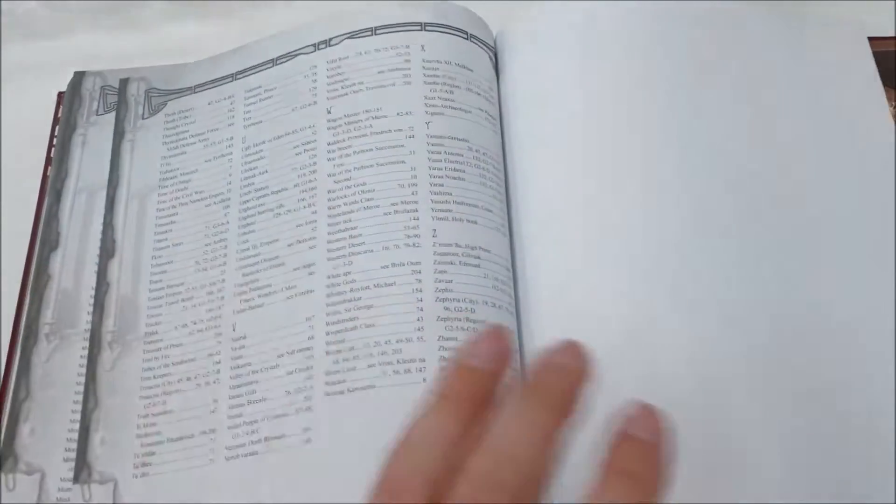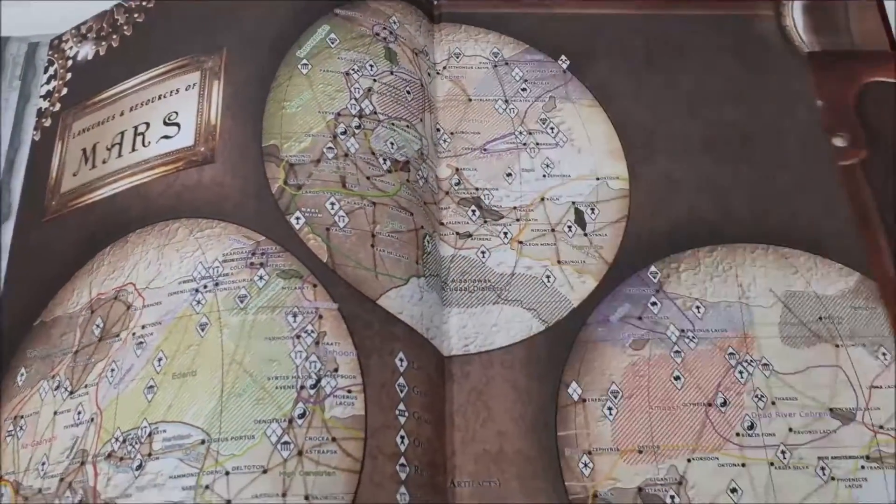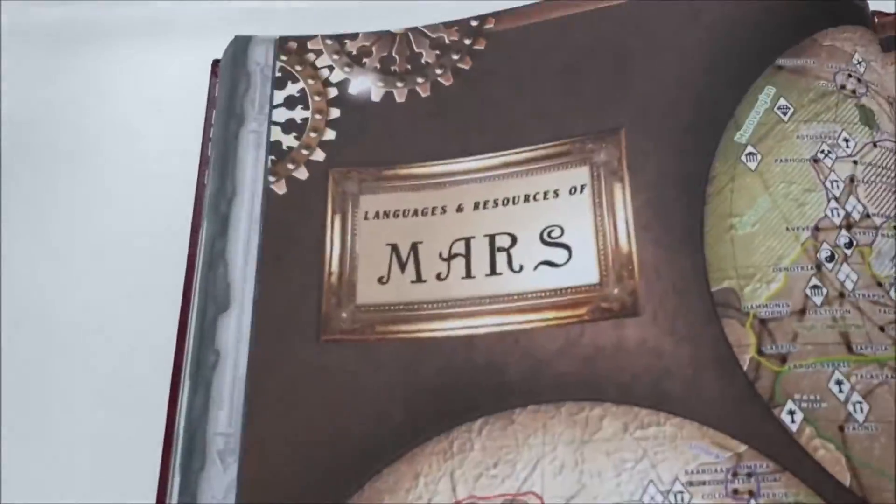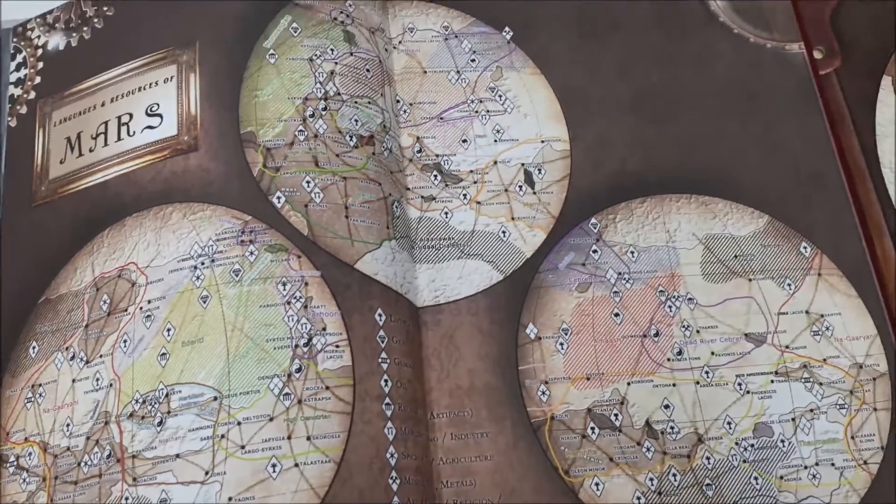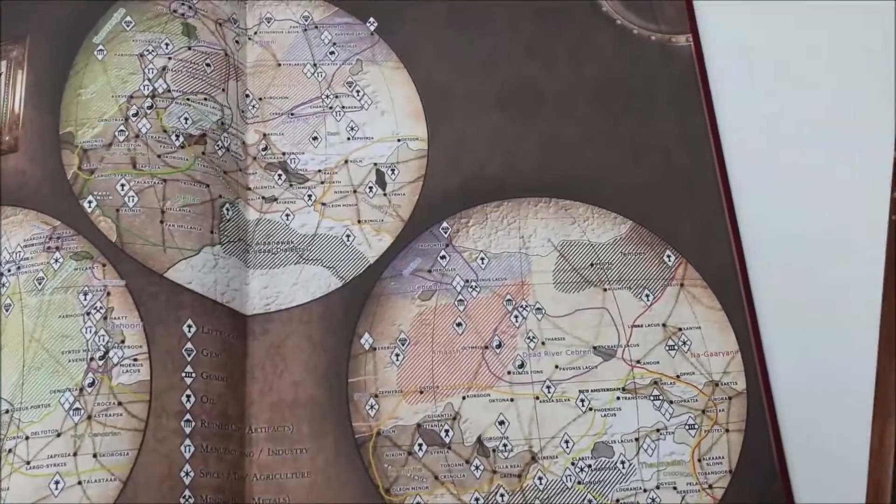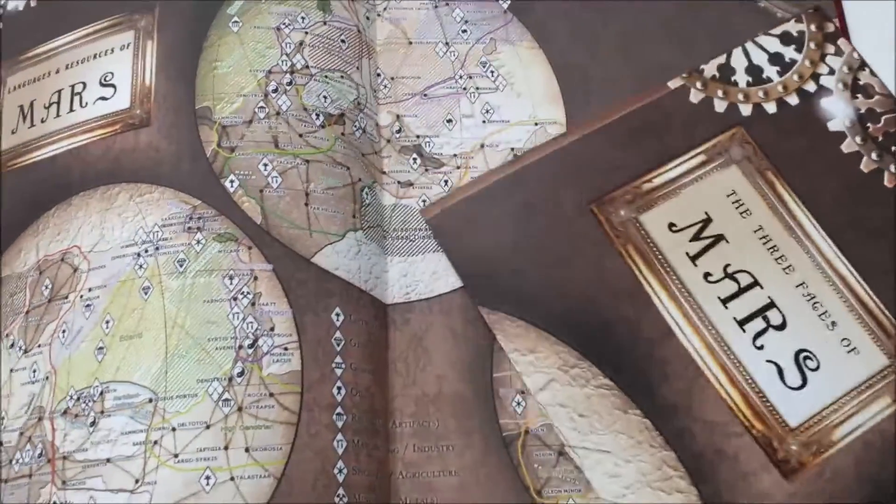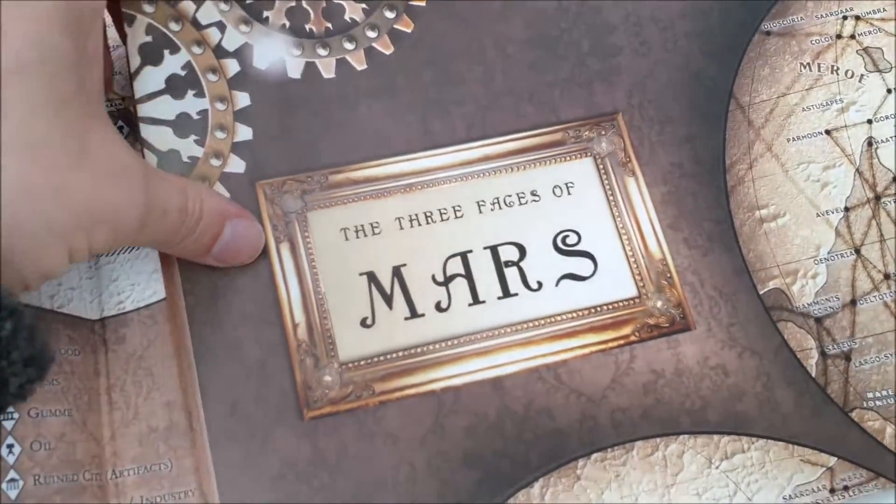And then the rear end papers. Yes, the rear end papers are hidden by the map. All right. And so as you can see, this is the languages and resources of Mars. So I think this is a really fabulous touch. All right. And then we have the map. We have the three faces of Mars. This is the map that we already have.